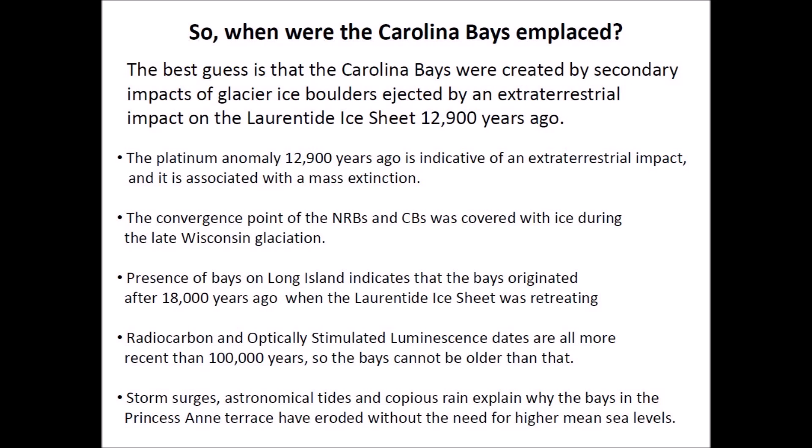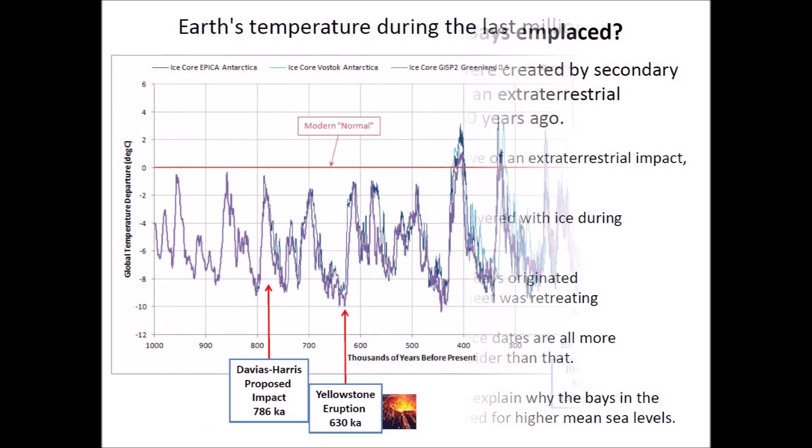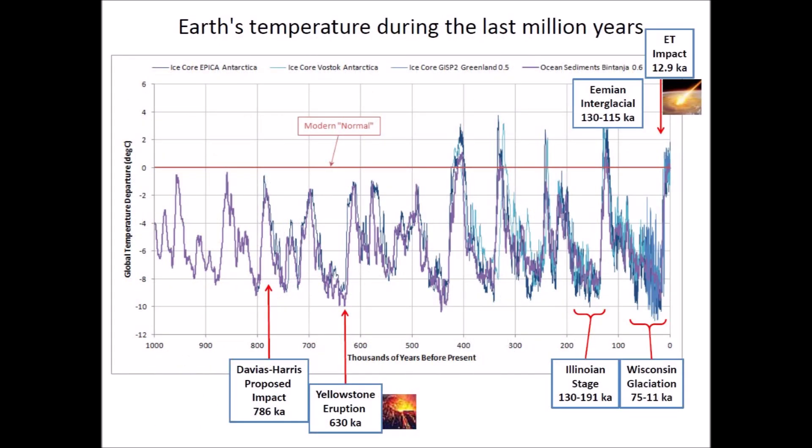So when were the Carolina Bays emplaced? The best guess is that they were created by secondary impacts of glacier ice boulders ejected by an extraterrestrial impact on the Laurentide Ice Sheet 12,900 years ago. The platinum anomaly 12,900 years ago is indicative of an extraterrestrial impact and is associated with the mass extinction. The convergence point of the Nebraska Rainwater Basins and the Carolina Bays was covered with ice during the late Wisconsin glaciation. Presence of bays on Long Island indicates that the bays originated after 18,000 years ago when the Laurentide Ice Sheet was retreating. Radiocarbon and optically stimulated luminescence dates are all more recent than 100,000 years. Storm surges, astronomical tides, and copious rain explain why the bays in the Princess Anne Terrace have eroded without the need for higher mean sea levels. The Earth's temperature record serves as a convenient backdrop for annotating all conditions necessary for the creation of the Carolina Bays, and the Glacier Ice Impact Hypothesis is doing well.